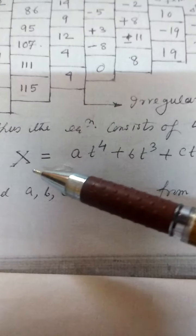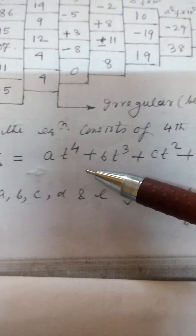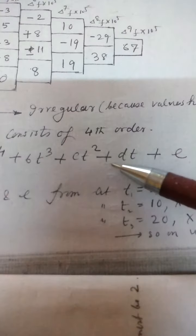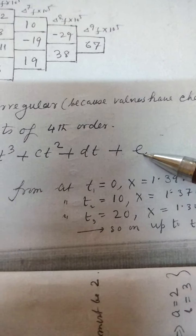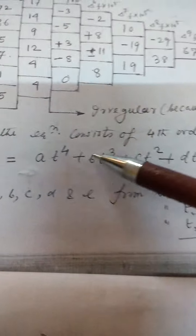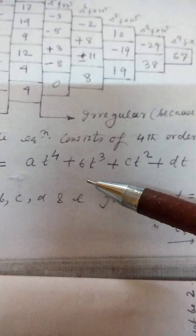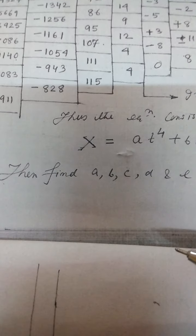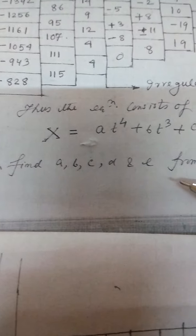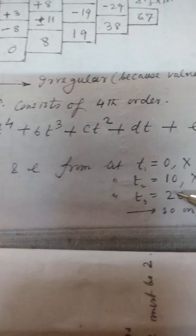Since it is fourth order, the equation is x = at⁴ + bt³ + ct² + dt + e. There are 5 unknowns: a, b, c, d, e. From the conditions given in the problem, we can find out a, b, c, d, e.